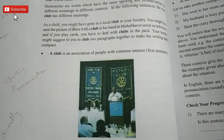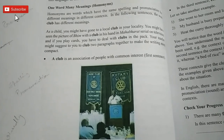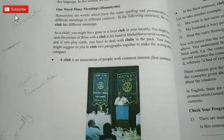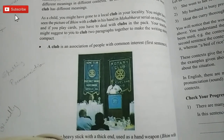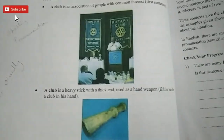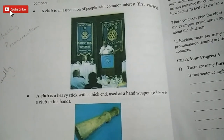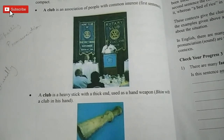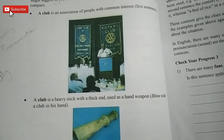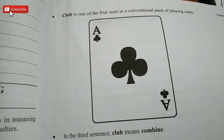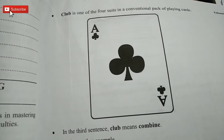The word 'club' has multiple meanings: first, a club is an association of people with a common idea; second, a club is a heavy stick made of wood, as seen in chess and other games; third, a club is a playing card suit. So the same word 'club' has three different meanings — that is a homonym.